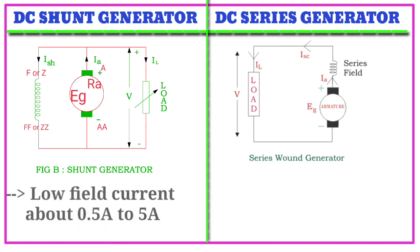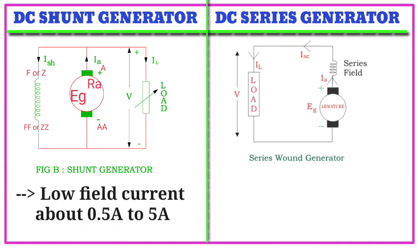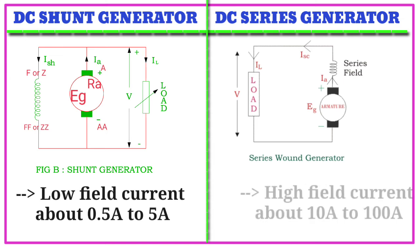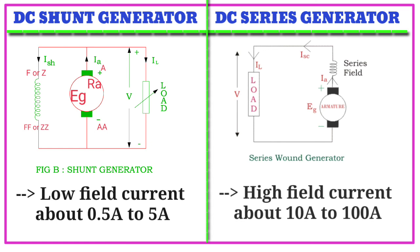Fifth point: low field current of about 0.5 amps to 5 amps for the shunt generator, whereas high field current of about 10 amps to 100 amps for the series generator.